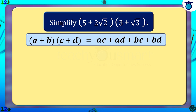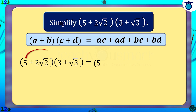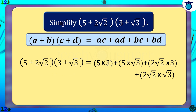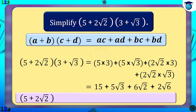That is, we apply term-by-term multiplication. (5 + 2√2) multiplied by (3 + √3) equals 15 plus 5√3 plus 6√2 plus 2√6.